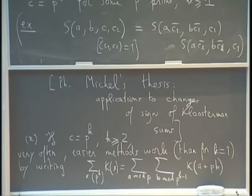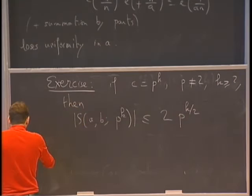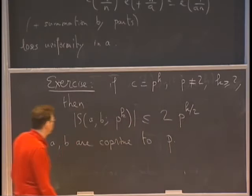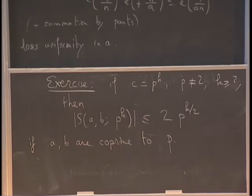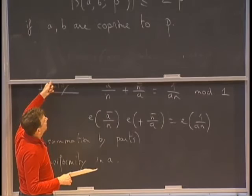As an exercise: from this, it's very easy to deduce the analog of the Weil bound for Kloosterman sums when the modulus is p^K and K ≥ 2. Maybe you need p different from 2, but K ≥ 2. Then from this it's not difficult to prove that the Kloosterman sum S(A, B; p^K) is at most 2·p^{K/2} if A and B are co-prime to p. Based on this, in many cases this reduces to the most difficult case, which is when you sum over A modulo p and do not have this extra variable to play with. So for the remainder of these lectures, I'm going to just concentrate on that case.